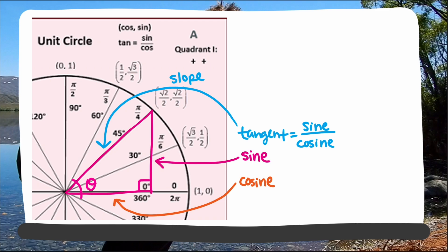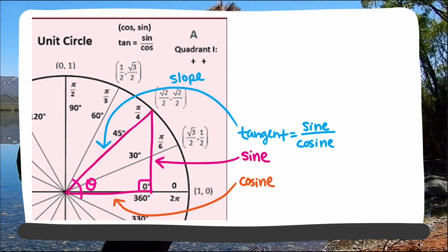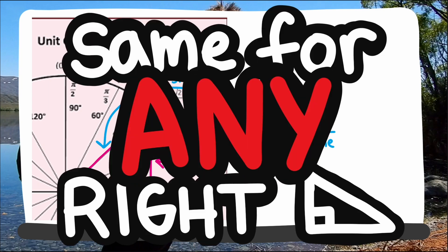Since sine is the rise and cosine is the run. But the power of trigonometry comes from the fact that this ratio is the same as any right triangle with that angle.